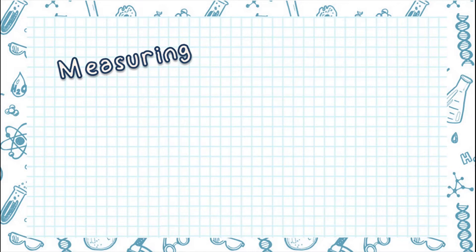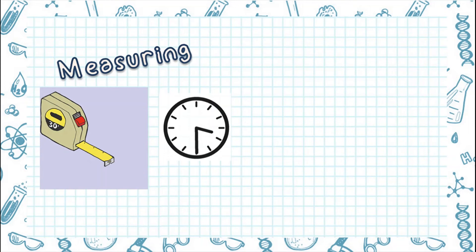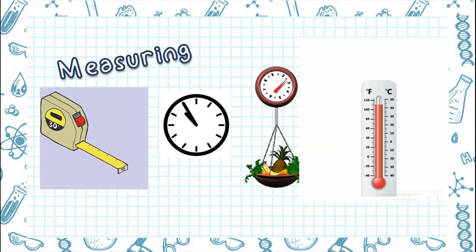Next, let's go to measuring. Measuring means to find out how far something moves, or how long an object is, or how warm or cold something is. We use measuring tools such as measuring tape, timer, weight scale, and thermometer to measure.